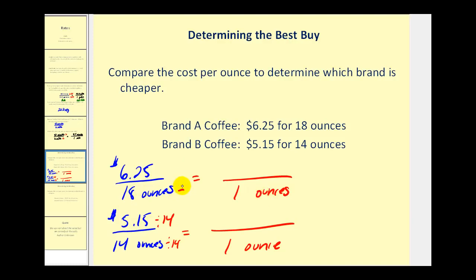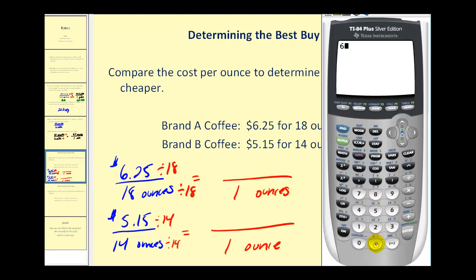We can see our denominators will be one in both cases. Let's now determine the cost per ounce. So we have $6.25 divided by 18, and then we also have $5.15 divided by 14.